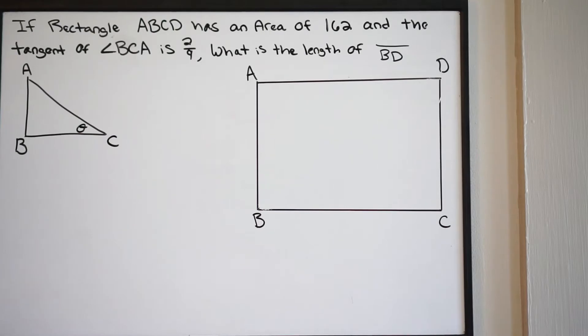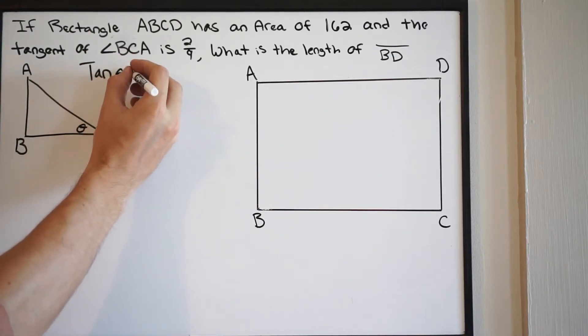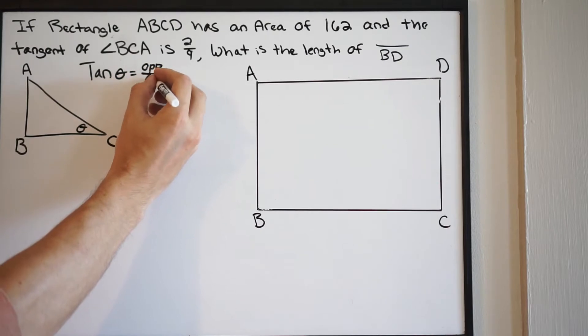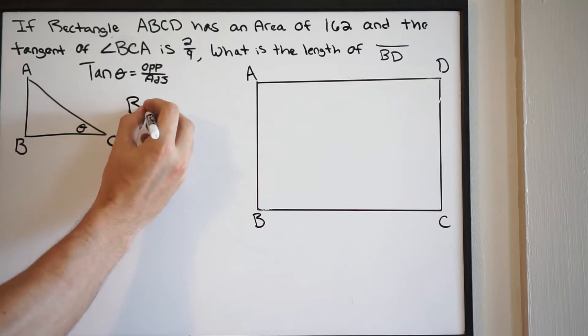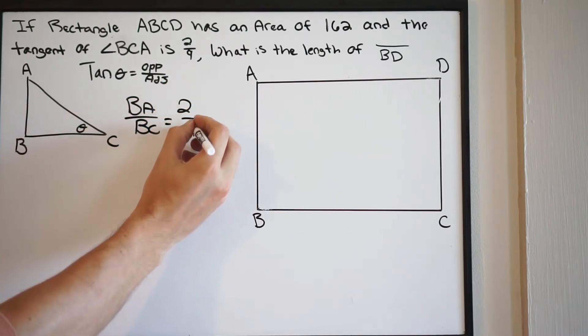What do we know about tangent? We know that tangent of an angle is going to be opposite over adjacent. This goes back to trig functions. We know that tangent of any angle, or in this case tangent theta, is going to be opposite over adjacent. So knowing that, we know the following. We have length BA, that's our opposite. Our adjacent is going to be length BC. In other words, we can write BA over BC equals 2 over 9.